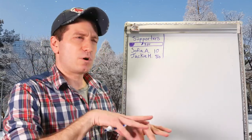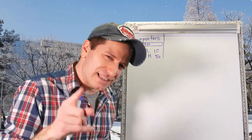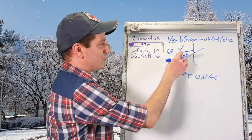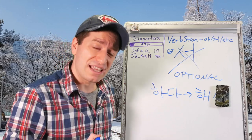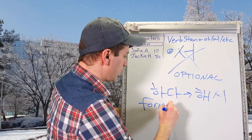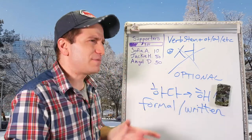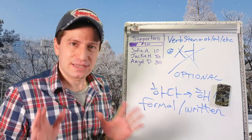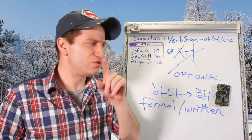Let's talk about some more advanced notes about this form. First of all, when you use the 서 form, the 서 is actually optional. You might see this form used without the 서 at the end — still conjugated but no 서. You might find this in more formal or written styles, and sometimes in idioms. But it has the same meaning. My recommendation is to not remove it.